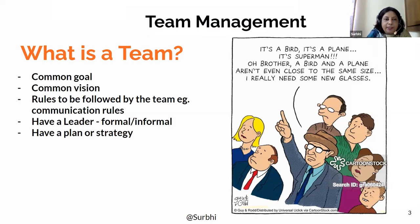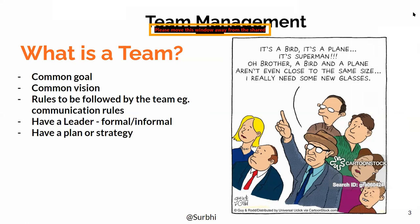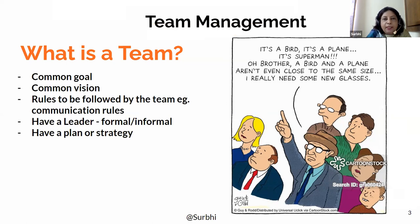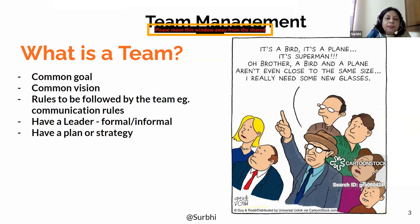Let us first start by understanding what a team is. A team is a group of people who share a common goal and a common vision. The common goal means that each person will be looking at the same objective for which the team is being formed. If everyone does not look at the same thing, the team cannot achieve the objectives for which it was formed. Everyone should be sharing the common vision for which the organization is there.